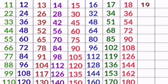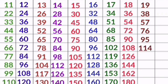19 1s are 19, 19 2s are 38, 19 3s are 57, 19 4s are 76, 19 5s are 95, 19 6s are 114, 19 7s are 133, 19 8s are 152, 19 9s are 171, 19 10s are 190.